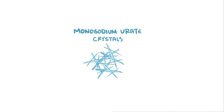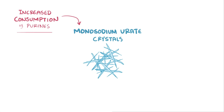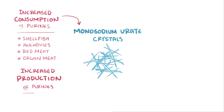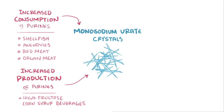These crystals can form as a result of increased consumption of purines, like from consuming purine-rich food like shellfish, anchovies, red meat, or organ meat. They can also result from increased production of purines — for example, high fructose corn syrup-containing beverages could contribute to the formation of uric acid by increasing purine synthesis.